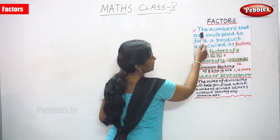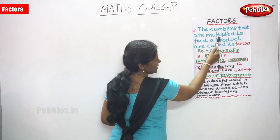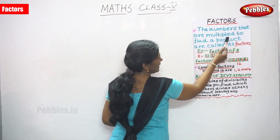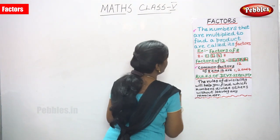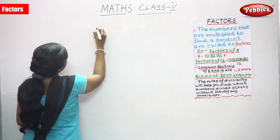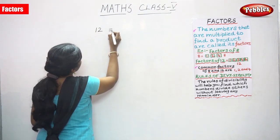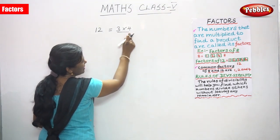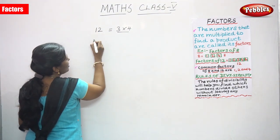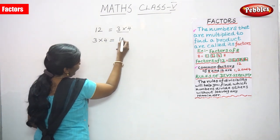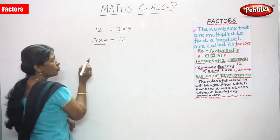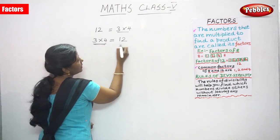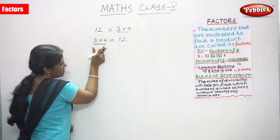Factors. The numbers that are multiplied to find a product are called its factors. For example, 12. So, 3 into 4 — these two are factors. This is the product. 3 into 4, you can get 12. So these two are factors. I've already taught you in the multiplication class: 3 is a multiplicand and 4 is a multiplier. We get the product 12. These two are called factors and this is the product.